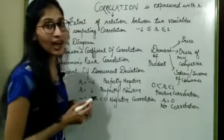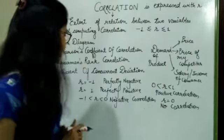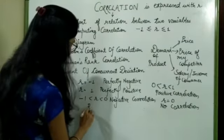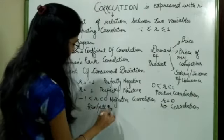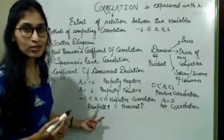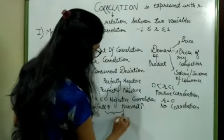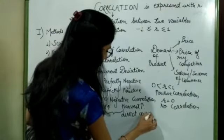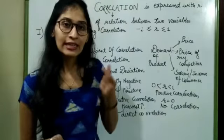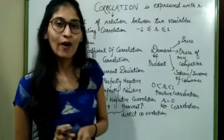Now what are these — R equals minus 1, R equals 1? Let's understand. Take the case where with good rainfall, my harvest is increasing. With the increase in rainfall, there is an increase in harvest. So with the increase of one variable, the other variable is also increasing. This is direct correlation or positive correlation. But if with the increase of one variable the other decreases, we call it indirect relation or negative correlation.